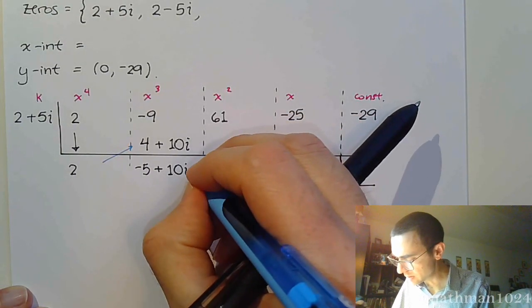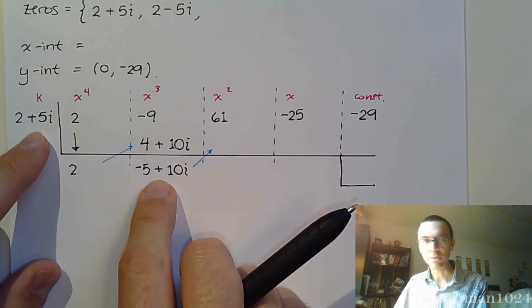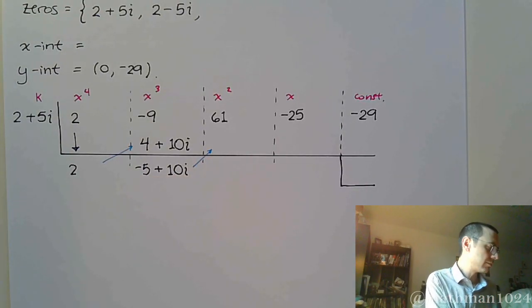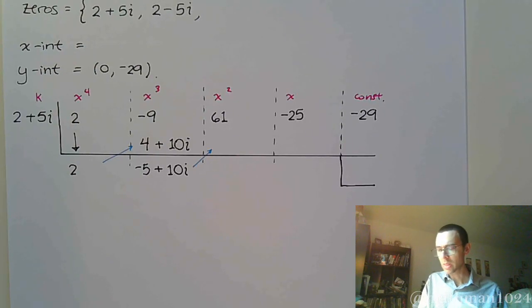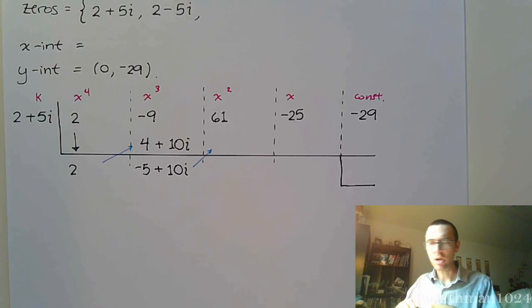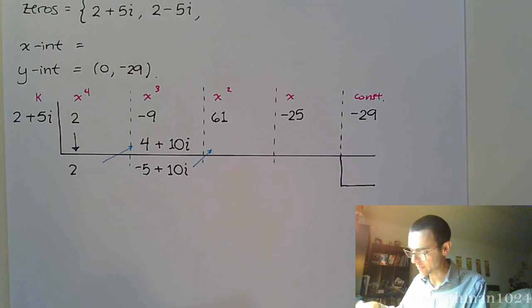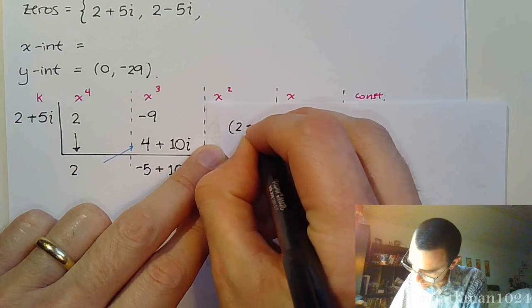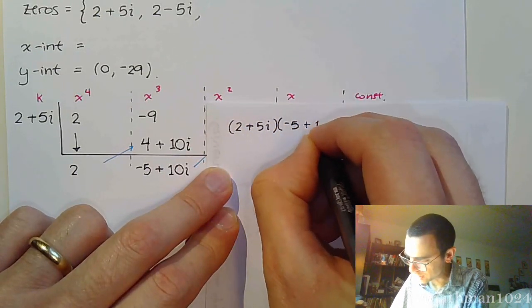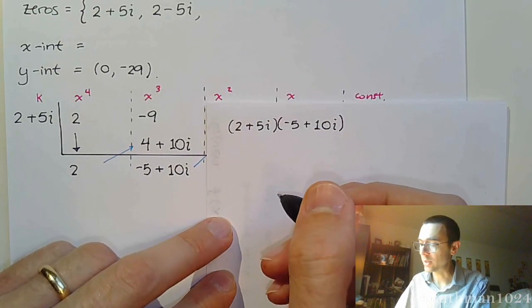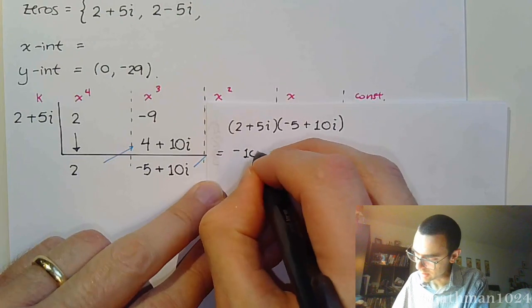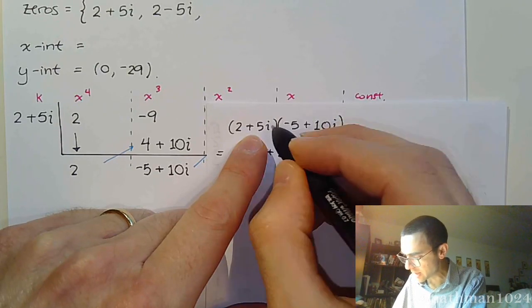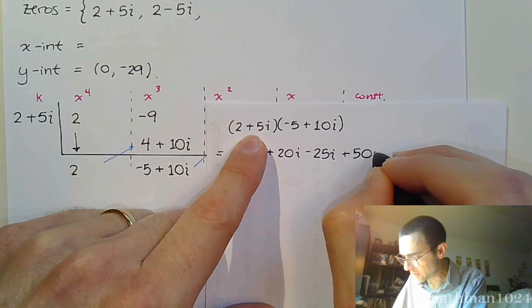And now, we combine these guys. Combine the real stuff. So, that's -5, and then plus 10i. And now, we have to multiply. Oh, dear. This is where it gets kind of messy because we need to take these two guys and multiply them together. So, what you might want to do is just to have an extra piece of paper. So, I've got this extra piece of paper here and I'm going to do some work on the side. Alright, so I'm going to take 2 + 5i times -5 + 10i.